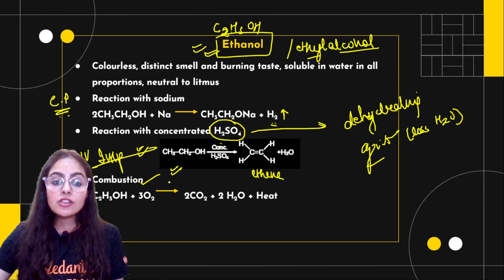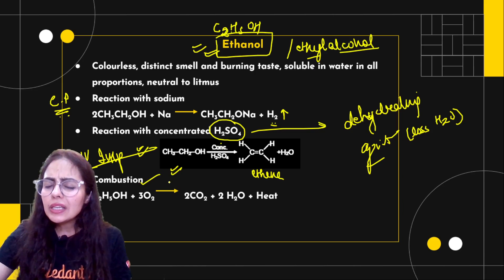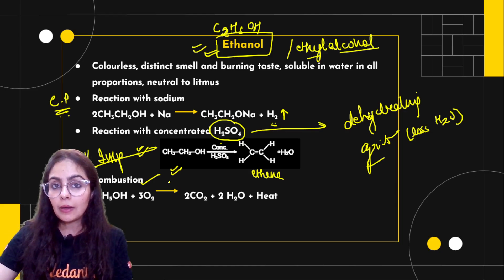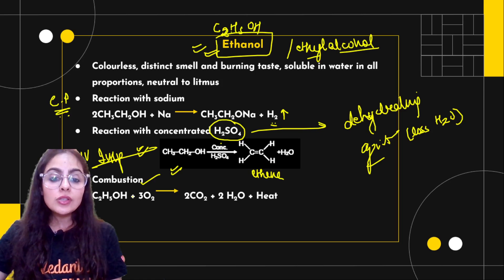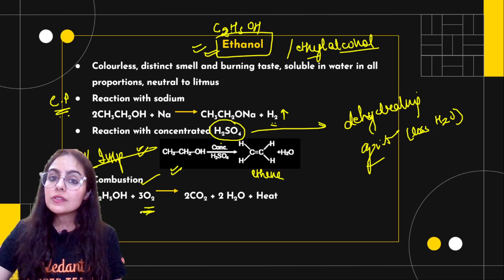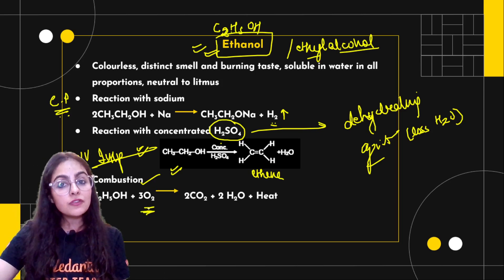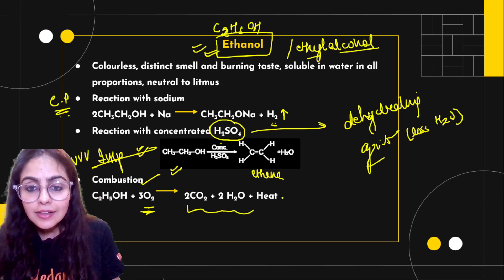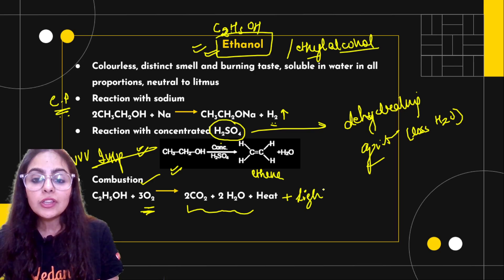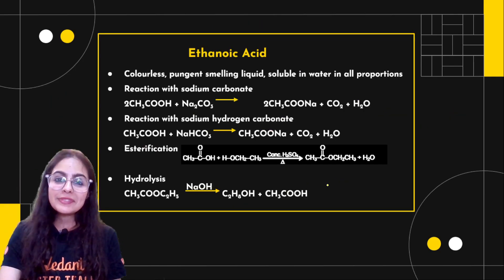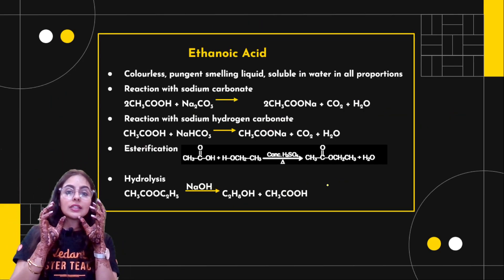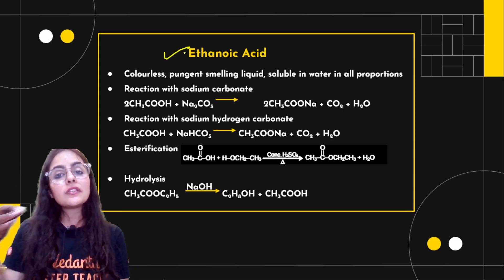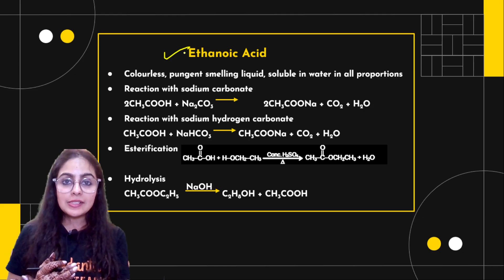Combustion of ethanol: as discussed, ethanol is a hydrocarbon derivative, so combustion always happens in the presence of oxygen and produces carbon dioxide, water, heat, and light as products.